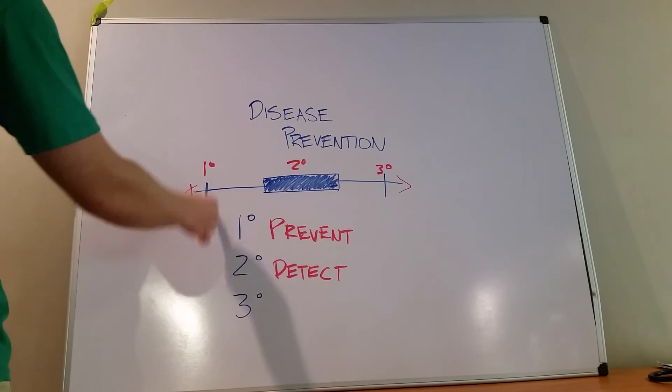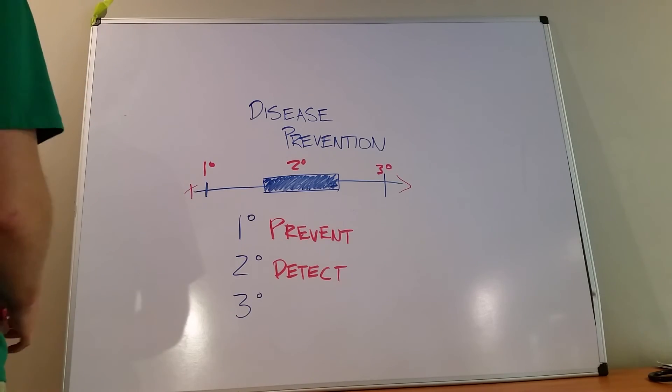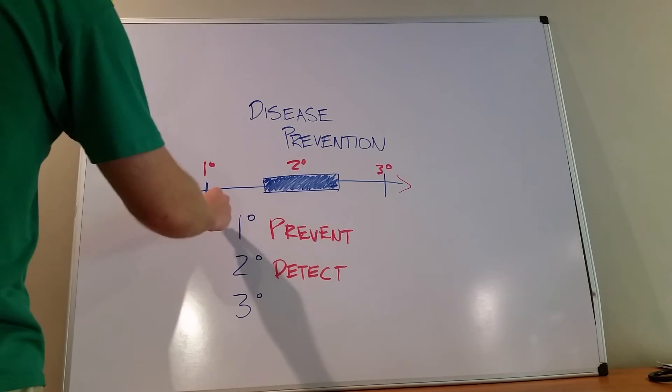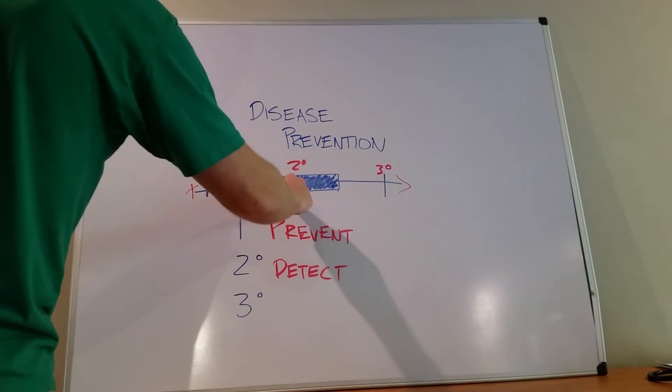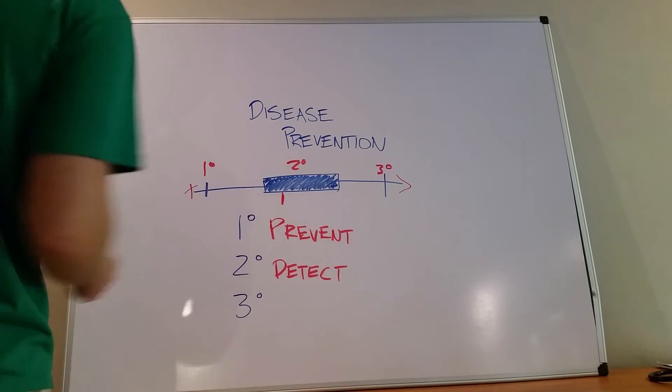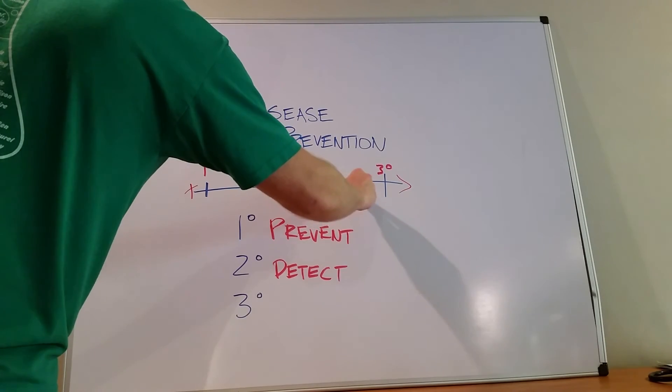You ate all the fiber. You drank a ton of water. And you still developed diverticulosis. And we picked it up. Let's say you developed it right here and we picked it up with a colonoscopy. And so now you have diverticulosis.